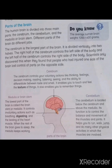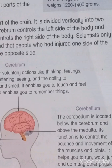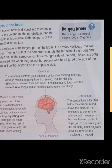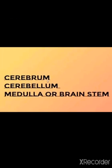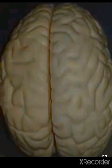The average human brain weighs 1200 to 1400 grams. The human brain is divided into three main parts: the first part is the cerebrum, the second part is the cerebellum, and the third part is the medulla, or brain stem.